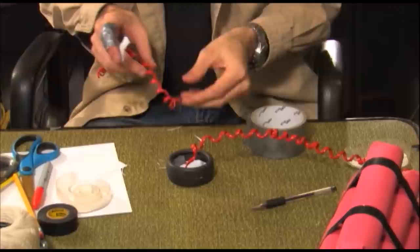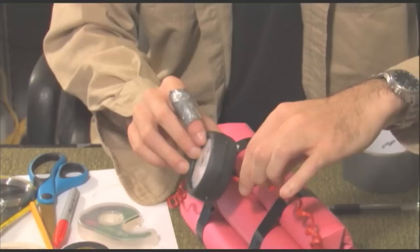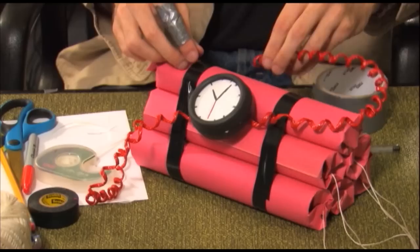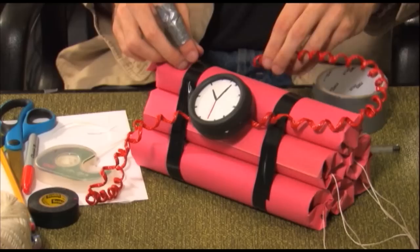Use duct tape to stick the wire to the inside of the timer. Tape the timer to the paper towel rolls and insert the ends of the wires into a crevice between the tubes or under the electrical tape. And there's your finished time bomb.